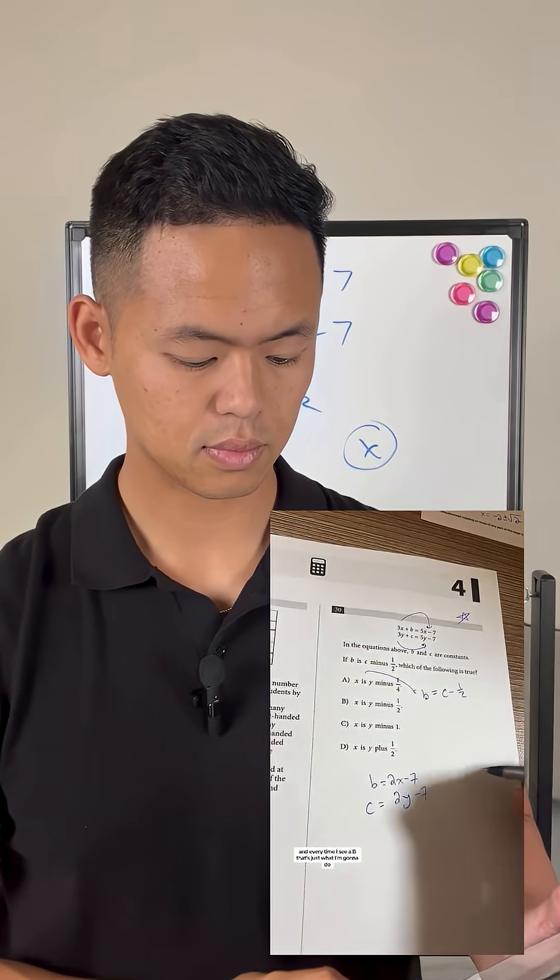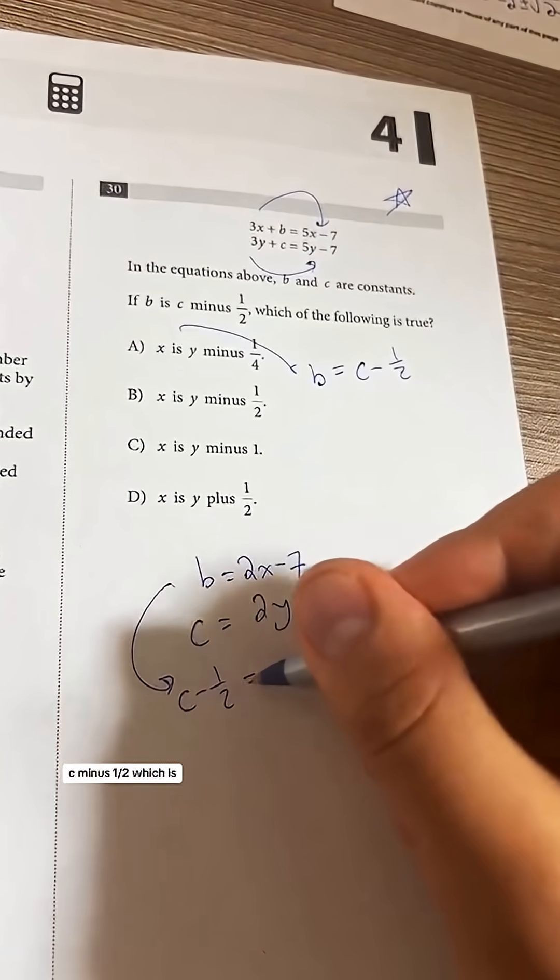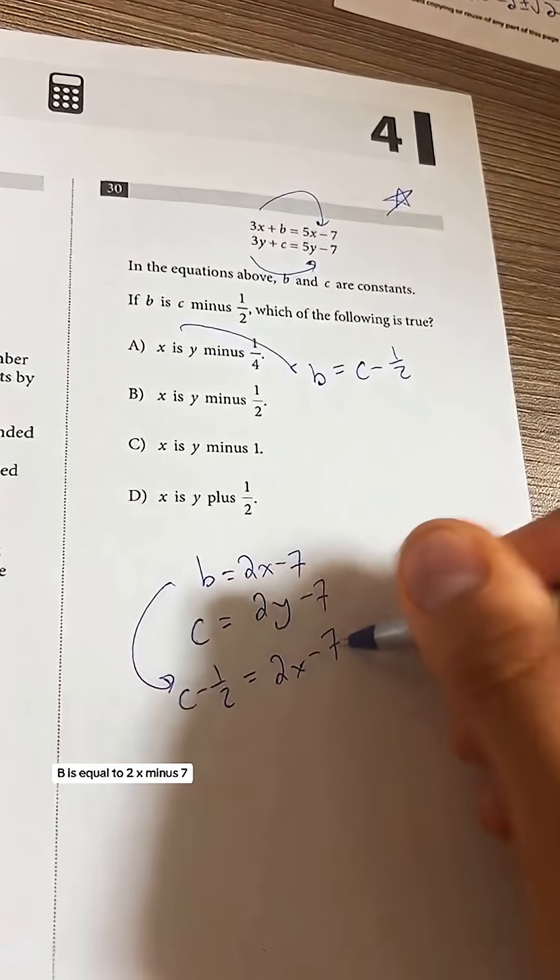And every time I see a b, that's just what I'm going to do. I'm going to write, this is my top equation coming down, c minus one half, which is b, is equal to 2x minus 7.